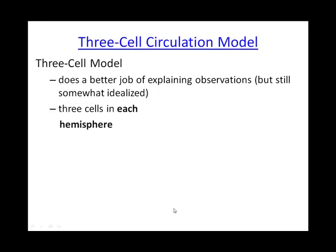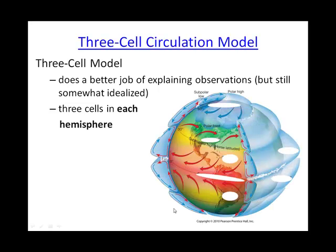So kind of based upon his original 1735 single cell model, we actually today now, if we go with a three cell model, things match up pretty good. And we'll be talking more about each of these cells. But I've gone ahead and you can see, I'm just going to focus on the northern hemisphere. So this is the equator and we have three cells.